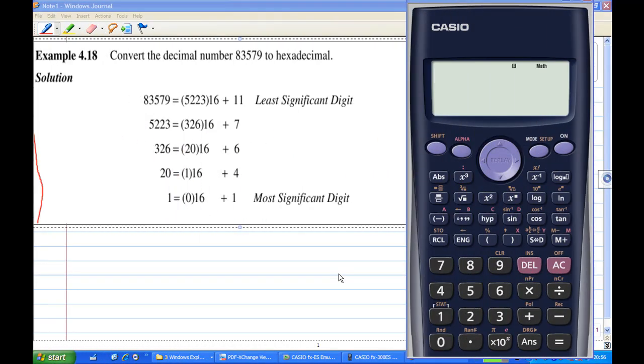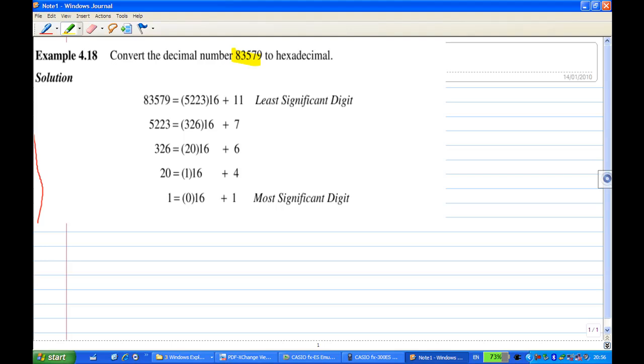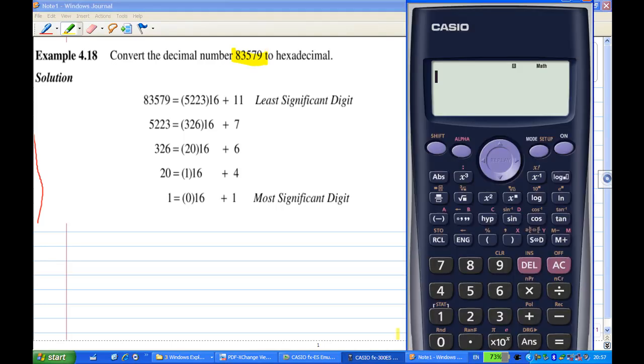Hi, for this recording I will show you how to do example 4.18 using a calculator. Convert decimal number 83579 to hexadecimal. The method to do this is to keep on dividing 83579 by 16 and get a remainder.